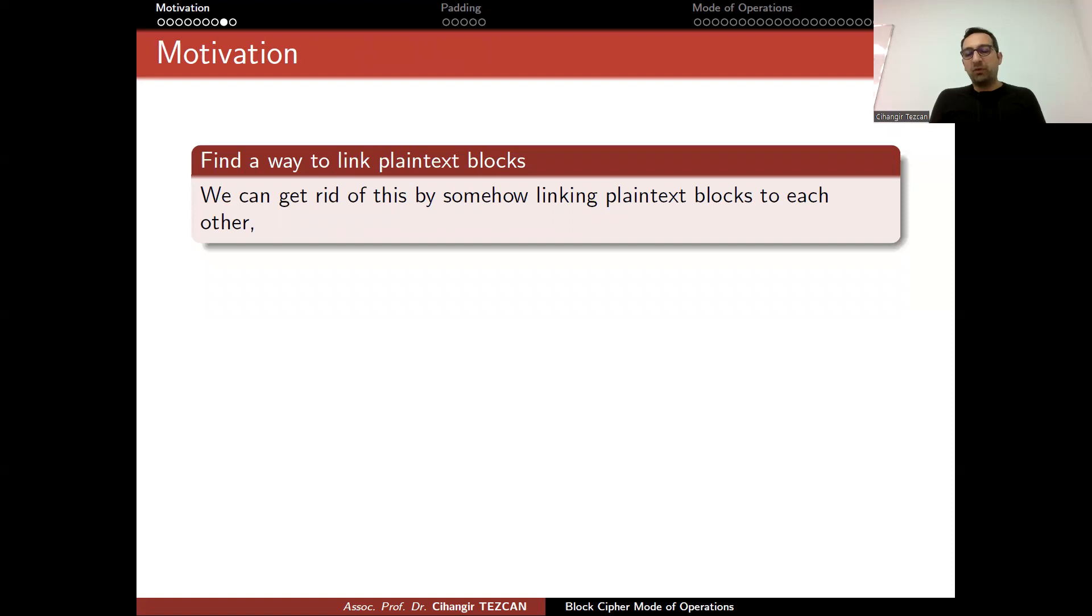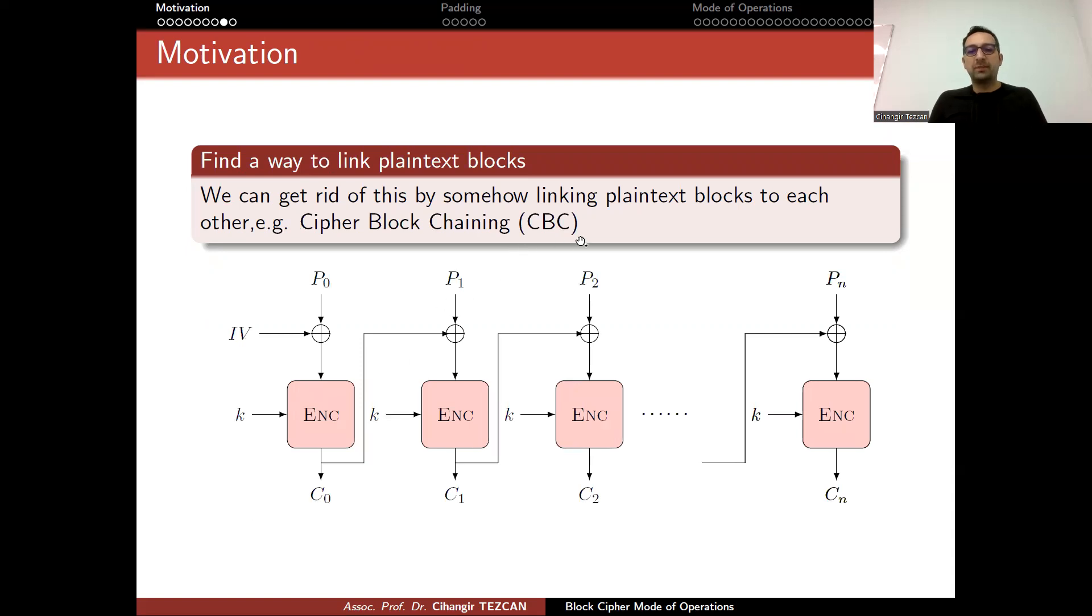An easy solution for this problem is to find a way to link plaintext blocks because they were independently encrypted. So this is why same plaintext blocks are mapped to same ciphertext blocks. So we can get rid of this by somehow linking plaintext blocks to each other. For example, cipher block chaining mode, CBC mode, as follows. So once you encrypt the plaintext block, you obtain a ciphertext block, but you also take this one and XOR it with the next plaintext block and so on. In order to have the symmetry, you start with an initialization vector. In this scenario, it is not a secret. It is written in the standard. But this way, if p1 and p2 are the same, now c1 and c2 will be different. So we solved the problem.